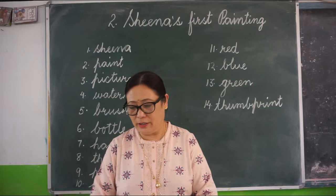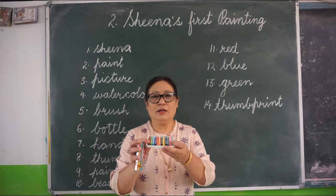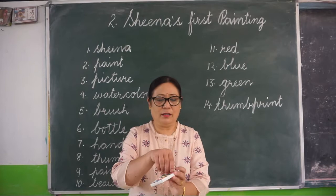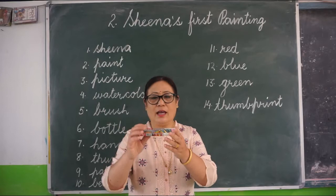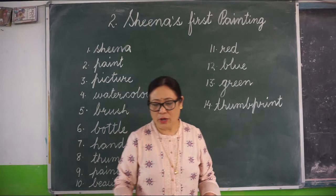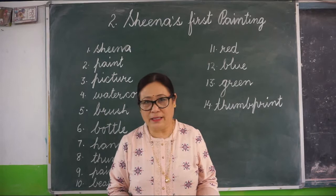This is a crayon, and this is a box of crayons. When you open this box, you can see different types of crayons inside. In the first chapter we learnt about the box of crayons. And here in this chapter we are going to learn about painting — what is painting, how do you paint, when do you paint, and with what do you paint. This we are going to discuss in this chapter.